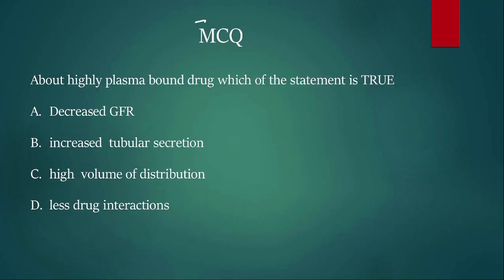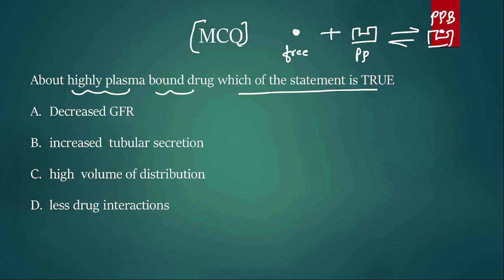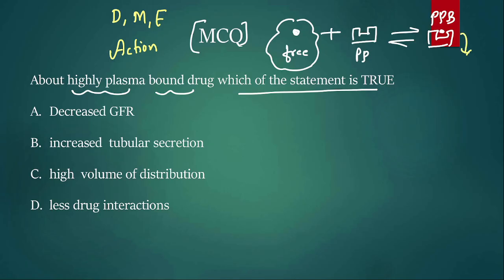Coming to the last question — general pharmacology: regarding a highly plasma protein-bound drug, which of the following statements is true? A plasma protein-bound drug exists in equilibrium: free drug binds to plasma proteins to form bound drug. The free drug is available for distribution, metabolism, excretion, and pharmacological action. The bound drug is not available for any of these.